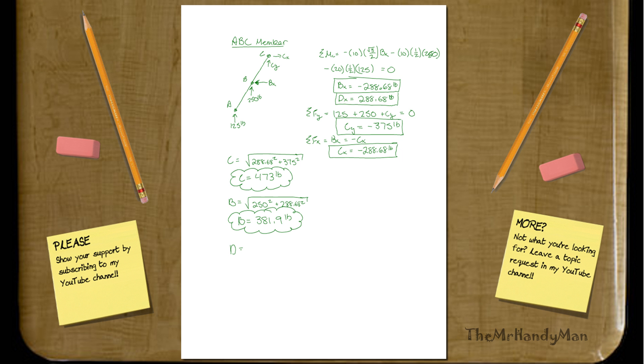And finally, if we finish up with D, you'll see the square root of 1250 squared plus 288.68 squared, and D is equal to 1283 pounds.